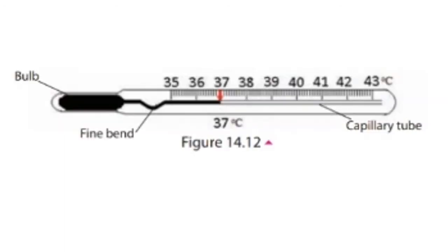Our next subtopic is the clinical thermometer. There are special features of the clinical thermometer. First, there is a fine bend in the capillary tube containing mercury. Second, the temperature range is short: 35°C to 43°C, because body temperature varies within this range. The parts of the clinical thermometer are the bulb, the fine bend, the capillary tube, and the scale.